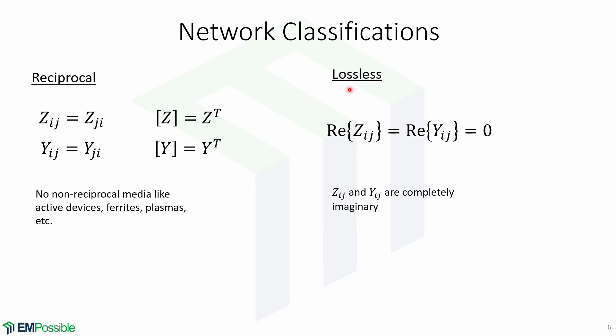Now for the lossless classification, if the network has no loss, then the real part of Zij equals the real part of Yij and both are equal to zero, meaning that Zij and Yij are completely imaginary.